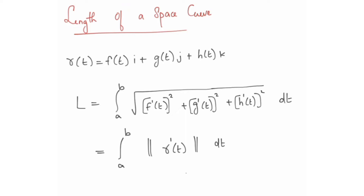For r(t), we take the first derivative of f, g, h — that is r'(t). The norm means we take the i, j, k components, square each coefficient, add them, and take the square root. So the arc length is integral from a to b of the norm of r'(t) dt.